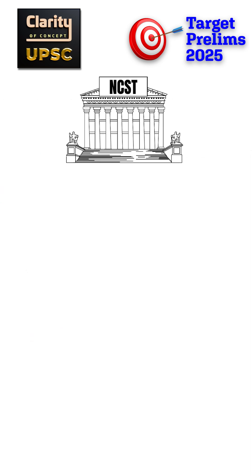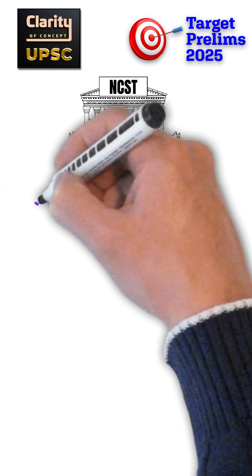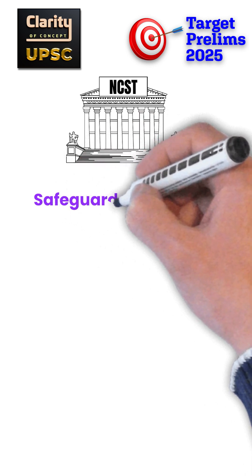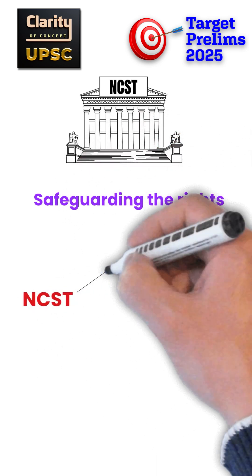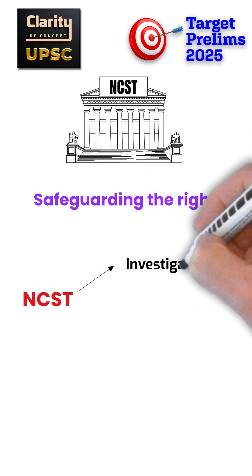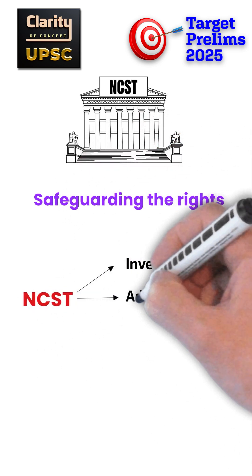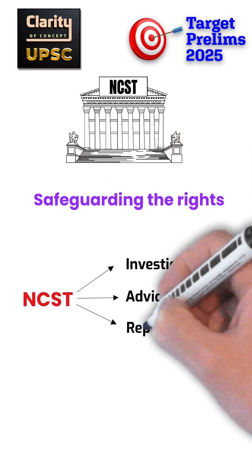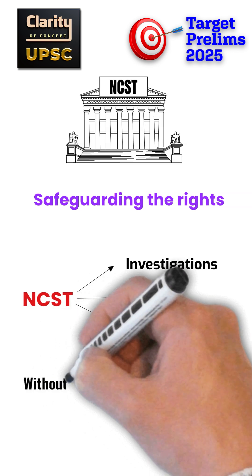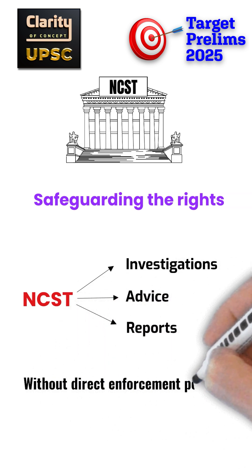In short, the NCST plays a crucial role in safeguarding the rights of scheduled tribes, but it functions through investigations, advice, and reports without direct enforcement powers.